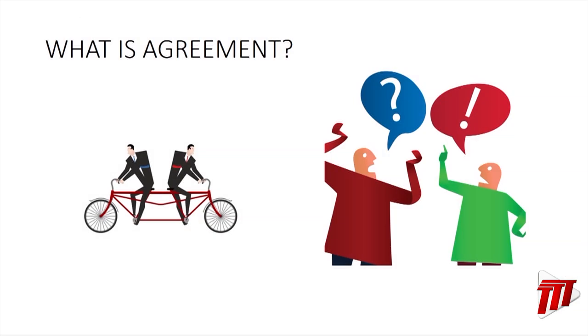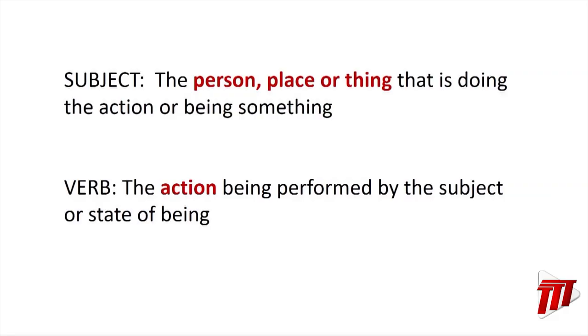We want to start by asking the question: what is agreement? What is disagreement? I'm sure many of you have had instances where you have disagreed with a friend or a colleague. Agreement has to do with when two people or things believe or go in the same direction. That is what we are applying in the concept of subject and verb agreement — the subject and the verb match and give agreement.